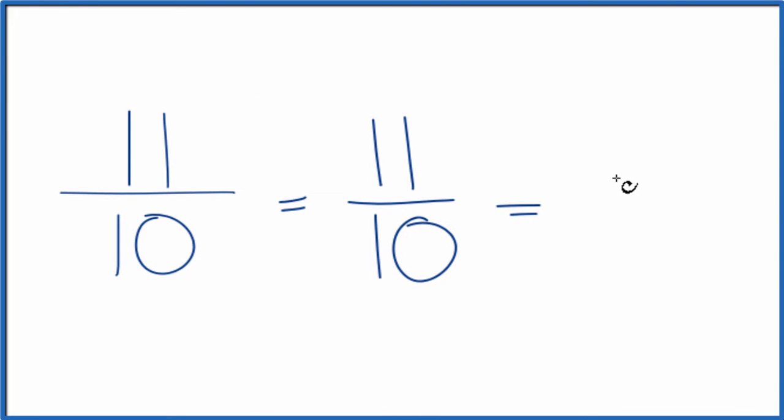10 goes into 11 one time with 1 left over. Bring the denominator across. And 11 tenths, that's equal to 1 and 1 tenths.